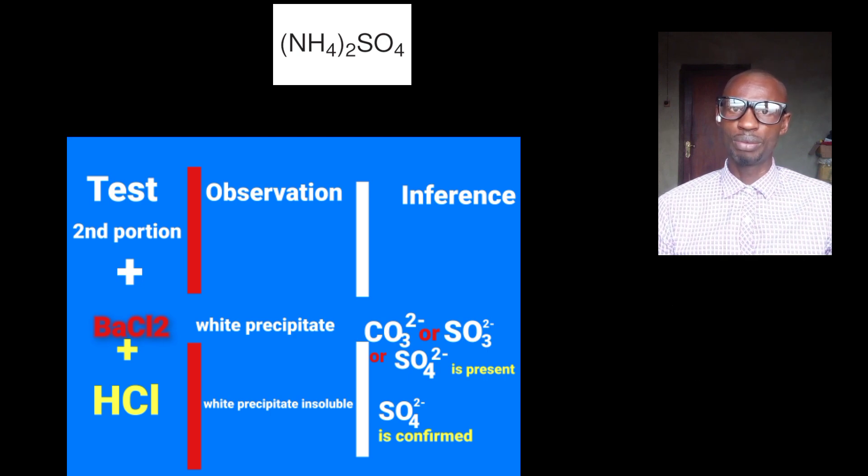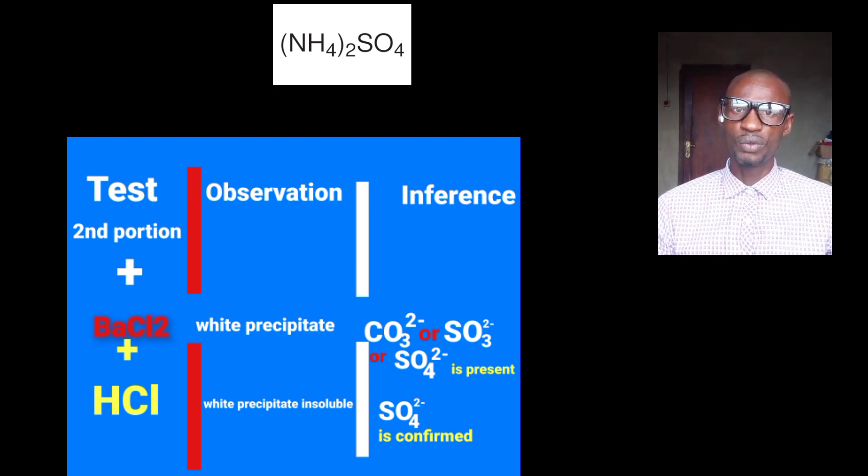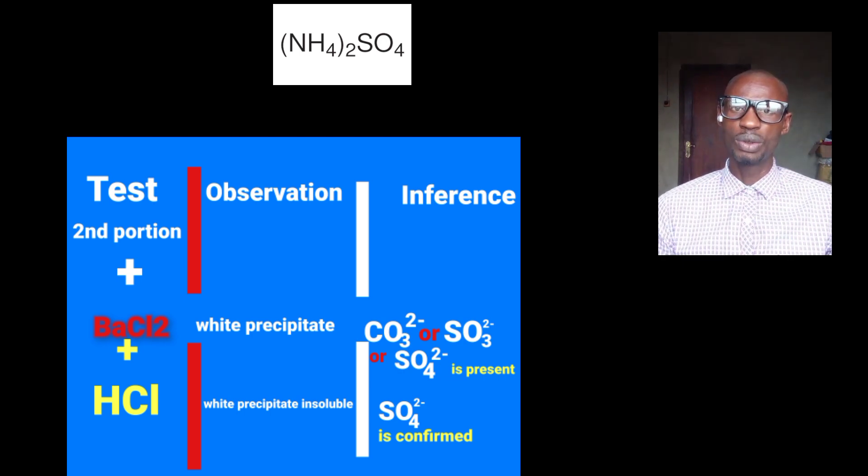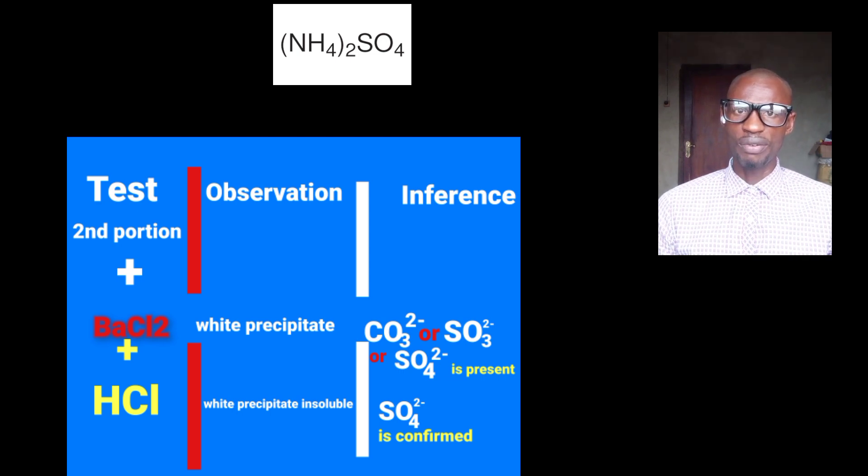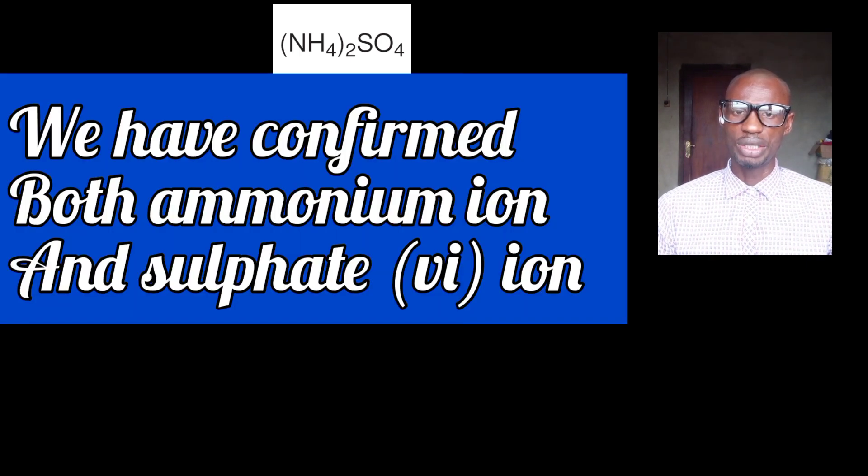Then at our test now, after adding barium chloride, followed by hydrochloric acid. Our observation, the precipitate remains insoluble. Or you can say the precipitate remains undissolved. You can pick any of those statements. At your inference, SO4 2- is confirmed. We confirm SO4 2- by adding hydrochloric acid to the barium chloride. And in the observation, we have white precipitate that remains undissolved. But if the precipitate dissolves, it's going to be either CO3 2- or SO3 2-. So we have confirmed the two ions present in the salt I mentioned earlier.